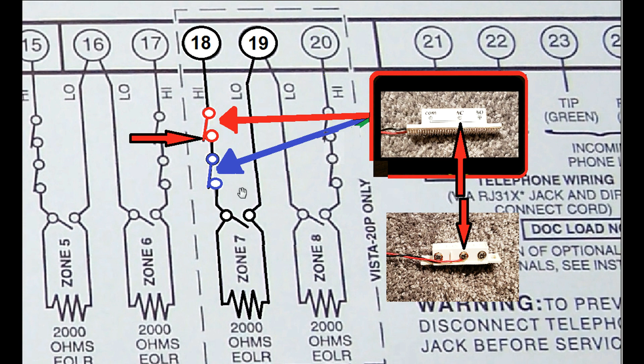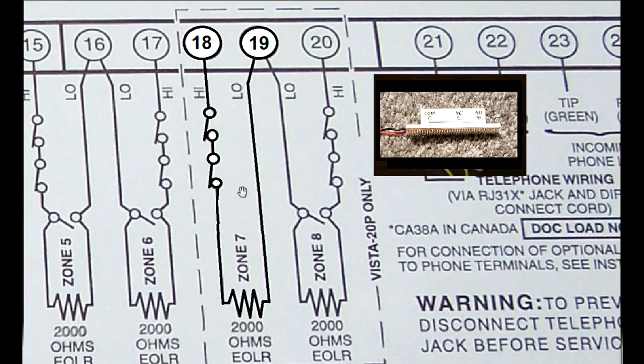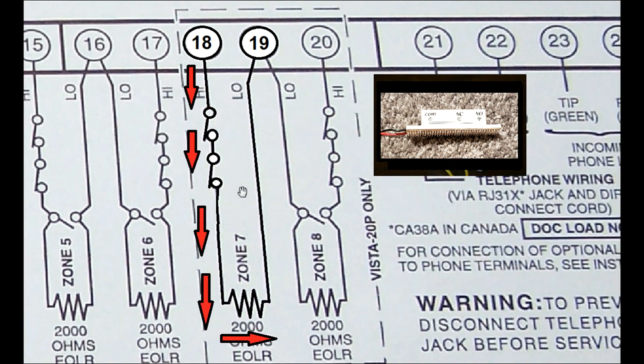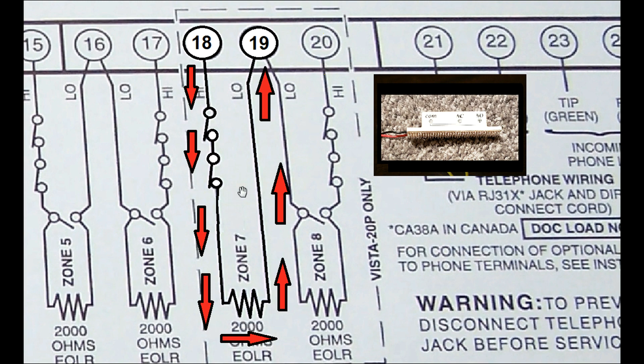These sensors are wired in a series configuration. What this means is, as the electricity leaves contact number 18, it has to travel through all of your switches one at a time, in order. If all of your switches are closed, the electricity then returns back to the VISTA panel through contact number 19, and it tells the panel that that loop is okay, or in other words, no alarm condition.